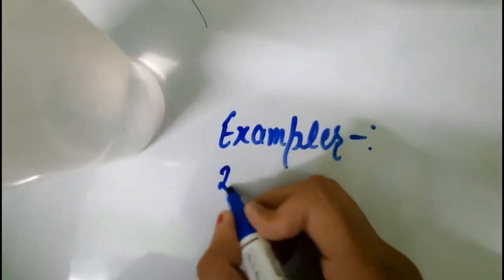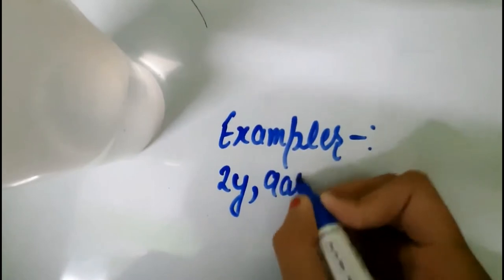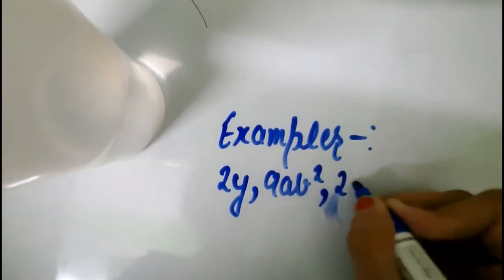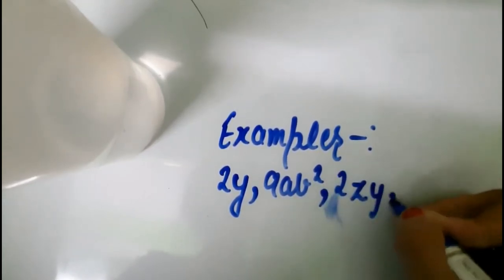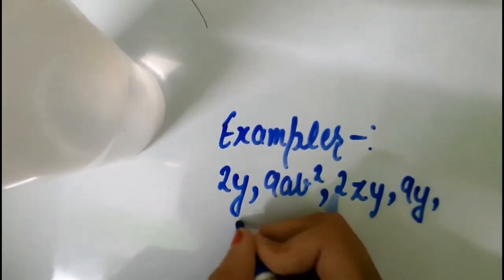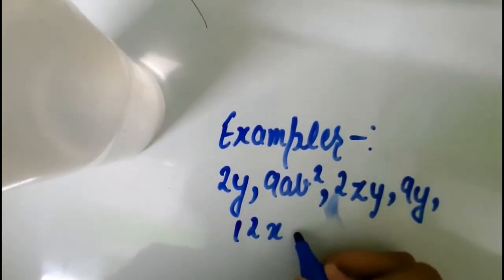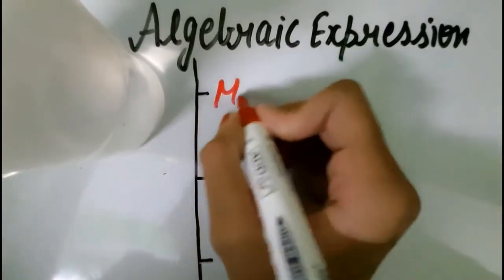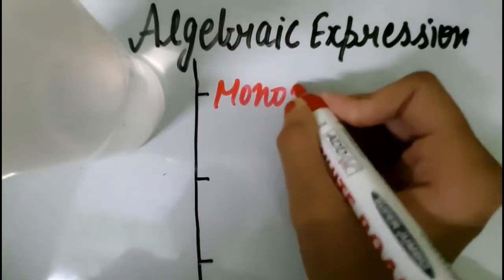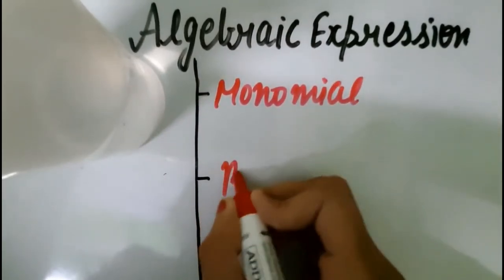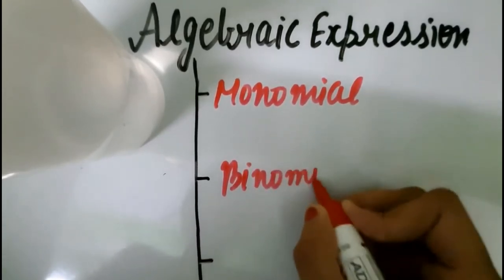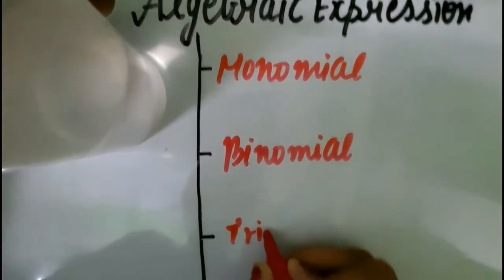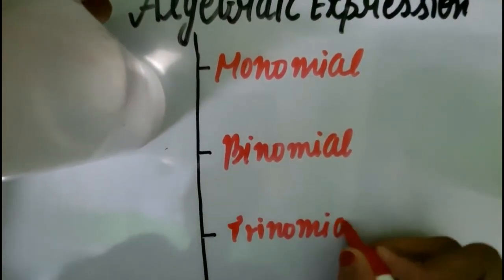Since these are the combination of two terms, which means there can be so many examples. For example, 2y, 9ab square, 2zy, 9y, 12x, etc., and so on. Now there are some types of algebraic expressions. Types of algebraic expressions can be divided as monomial, binomial, and trinomial. What is monomial? It is an expression which has one term. One term, for example, 3a, 7b, 9x.